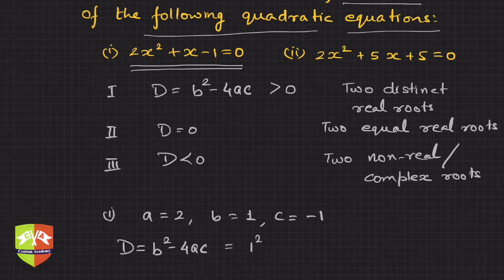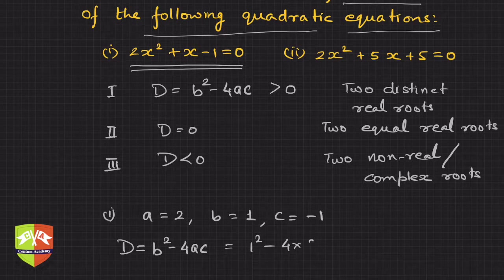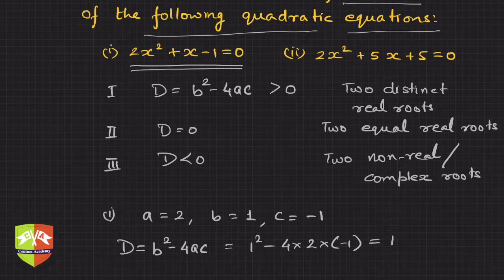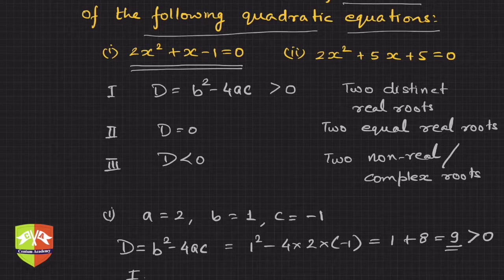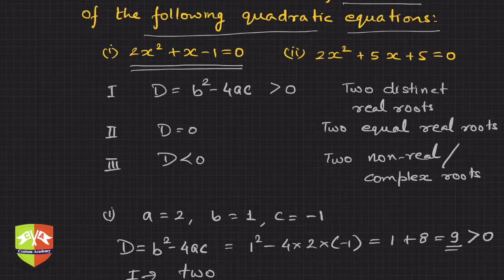D = 1² - 4 × 2 × (−1), which is 1 + 8 = 9, which is clearly greater than 0. So we get Case 1.